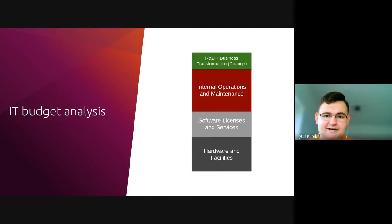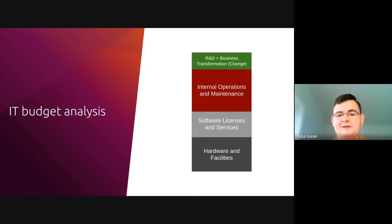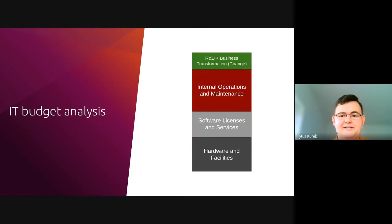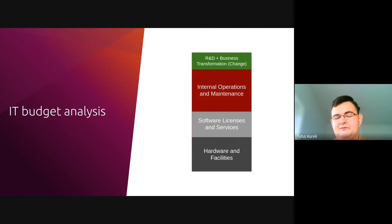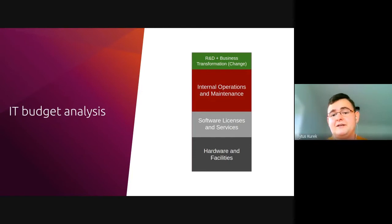Another portion of the budget is software licenses and services. If you're about to run private cloud infrastructure, you're probably not going to support it by yourself. You would be looking for some commercial distribution providing enterprise commercial support. If you go with a solution like VMware, there is a cost associated with licenses. If you go with OpenStack, there's usually no licensing, but you have to pay a yearly subscription for commercial support services.